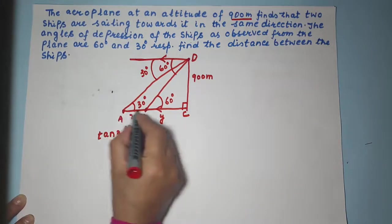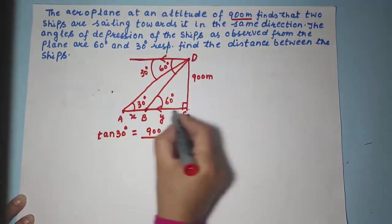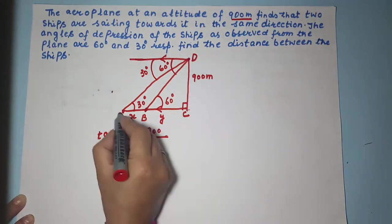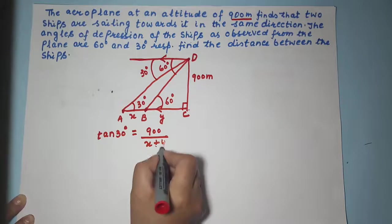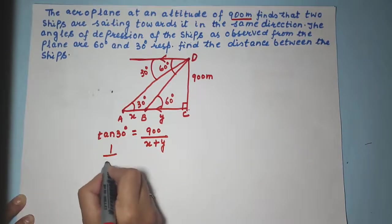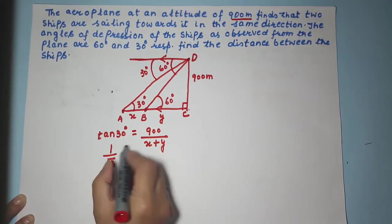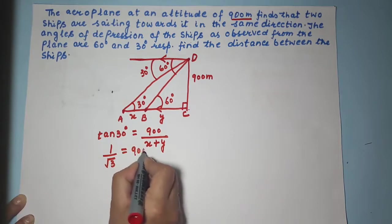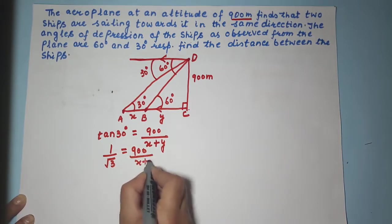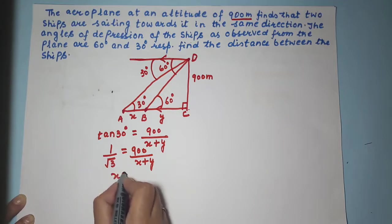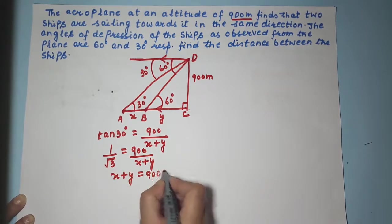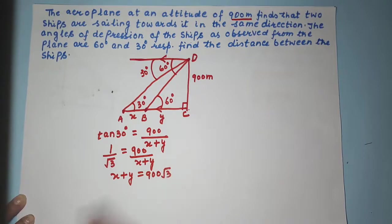And what is adjacent? This entire thing because in this triangle this is opposite and this entire thing is adjacent. So X plus Y. Tan 30 as we know is 1 by root 3 is equal to 900 upon X plus Y. Now if we cross multiply we will get X plus Y is equal to 900 root 3. Let's name this equation as 1.